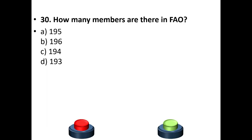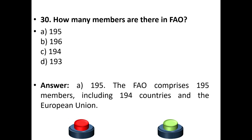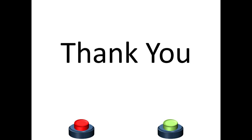Question 30: How many members are there in FAO? Options: 195, 196, 194, or 193. The answer is option A — 195. The FAO comprises 195 members, including 194 countries and the European Union. Thank you, and all the best for your exams! If you like this channel, please share, subscribe, and click the bell button to get notifications.